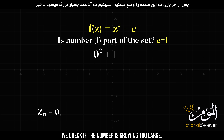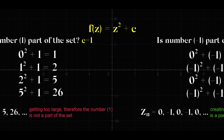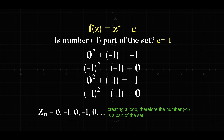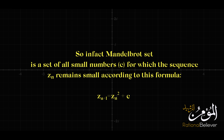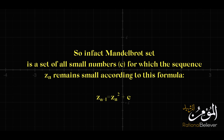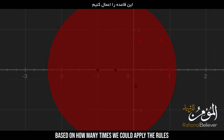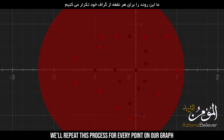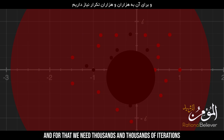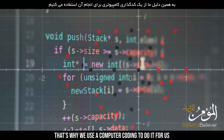After each application of the rule, we check if the number is growing too large. If it becomes too big, we stop the process for that particular point. We'll assign colors for each point based on how many times we could apply the rules before the number became too large. We'll repeat this process for every point on our graph, and for that we need thousands and thousands of iterations — which is indeed a lot of work for a human being. That's why we use computer coding to do this for us.